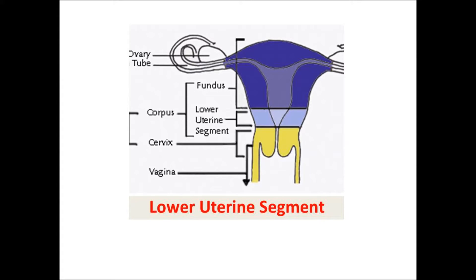The lower uterine segment, shown in bright blue, is normally absent from the uterus — it is formed during the third trimester. In about 5% of cases, the placenta implants in the lower uterine segment during the first trimester. However, most of these low-implanted placentas will migrate to the upper part of the uterus by the third trimester, and only 0.5% of all placentas remain in the lower uterine segment.